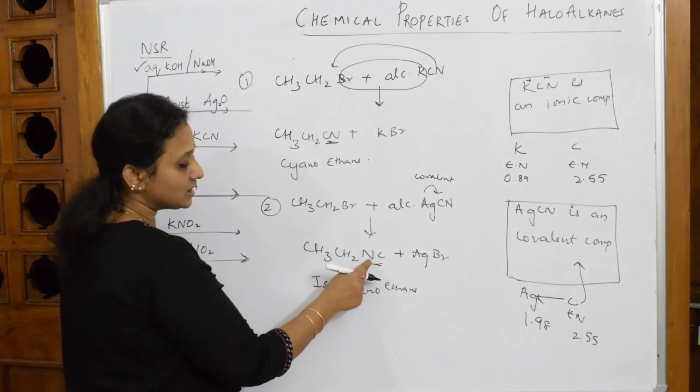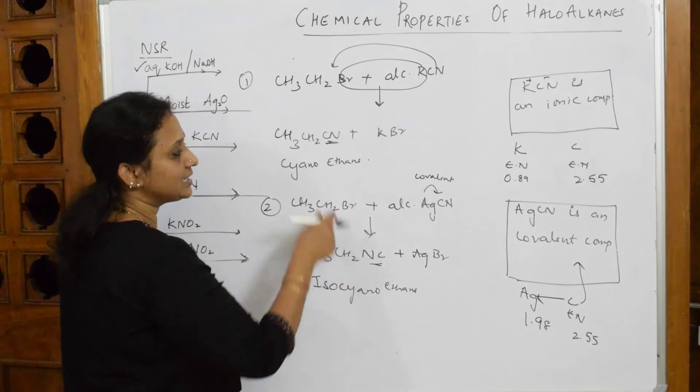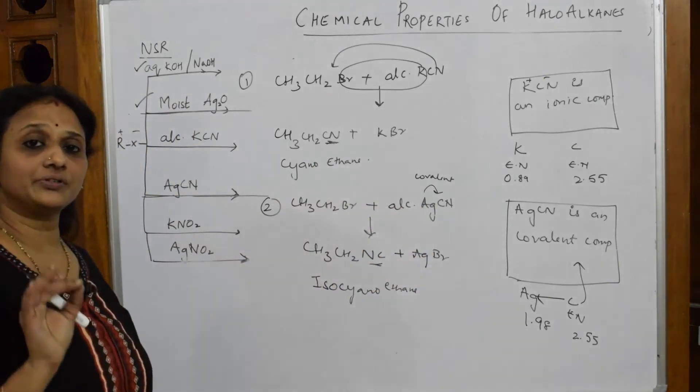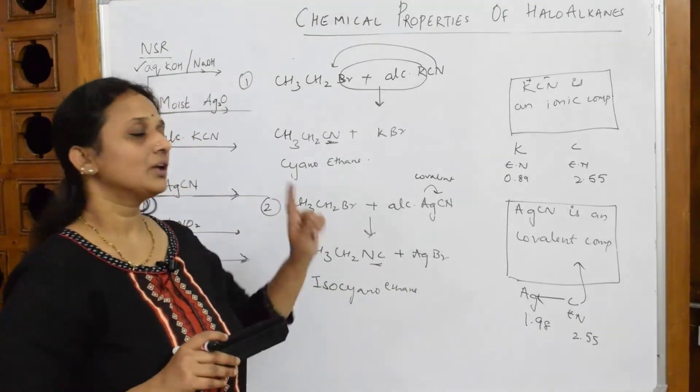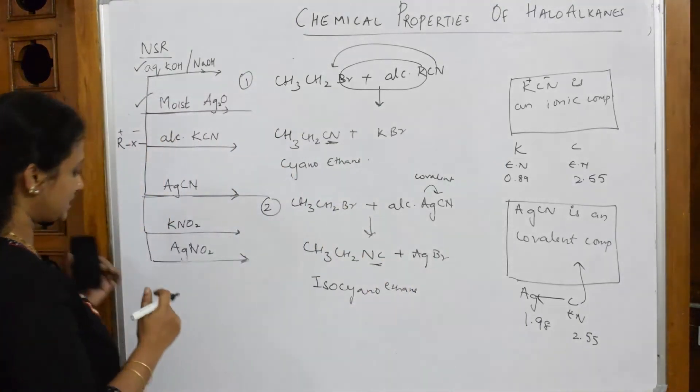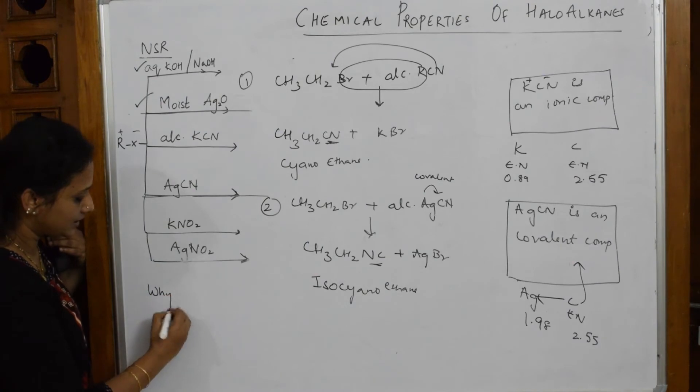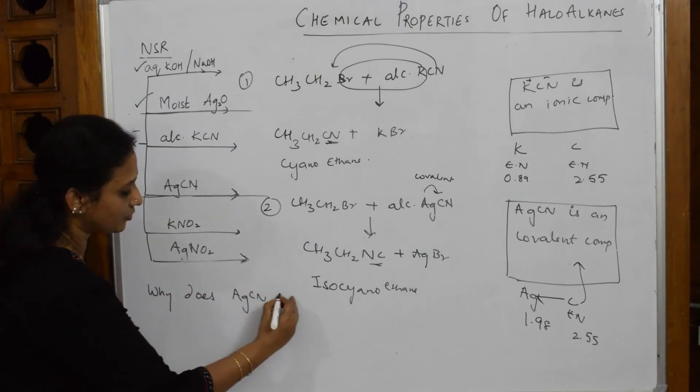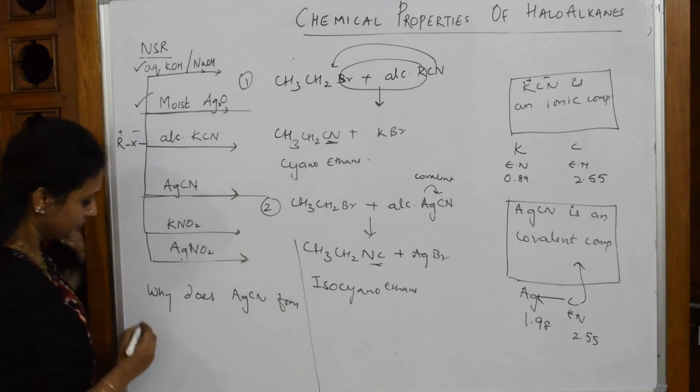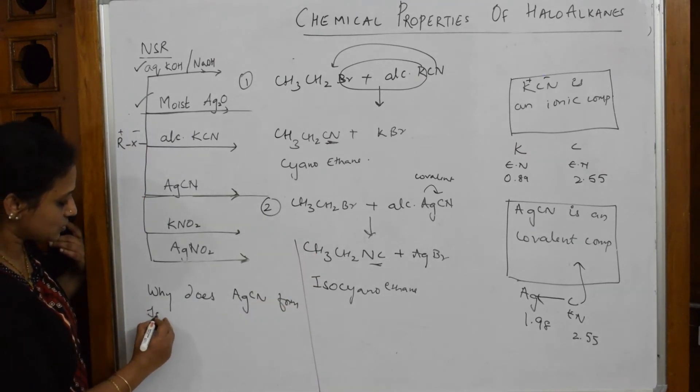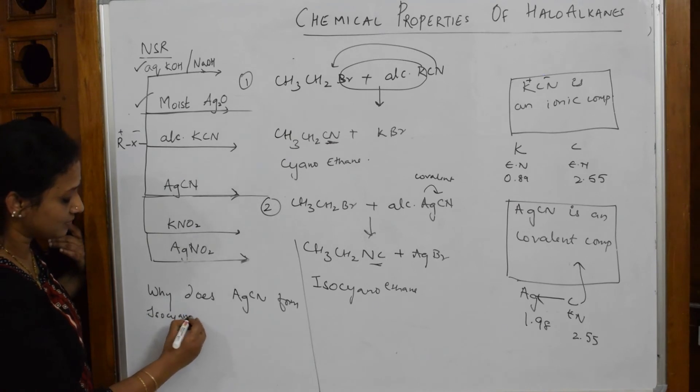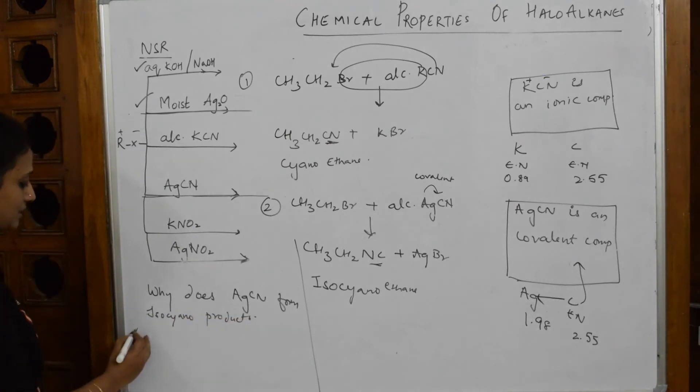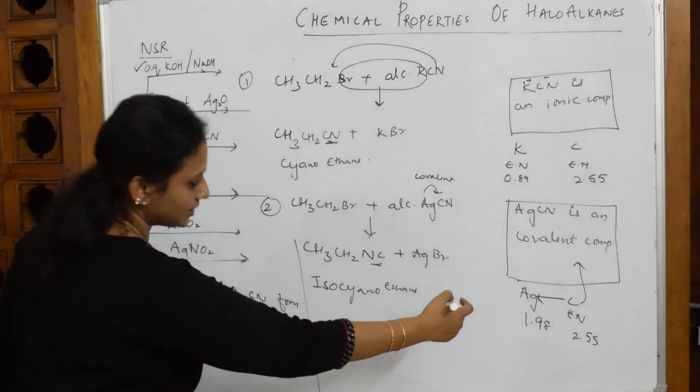That is the reason when alkyl halide combines with AgCN, it starts attacking from nitrogen because this is the only available site. So it forms isocyanide instead of cyano, and your AgBr is out. This is how you're going to reason. If a question is given to me, why does AgCN form isocyano products?